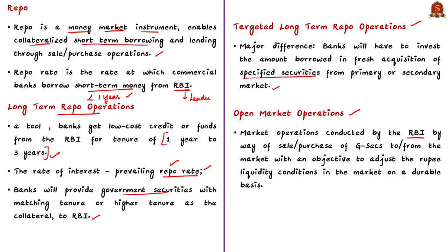Open market operations (OMO) are market operations conducted by the Reserve Bank of India involving two important activities: selling of government securities to the market, and purchasing of government securities from the market. The objective is to adjust rupee liquidity conditions in the market on a durable basis. When RBI feels there is excess liquidity, it sells securities, sucking out rupee liquidity. When liquidity conditions are tight, RBI buys securities from the market, thereby releasing liquidity.